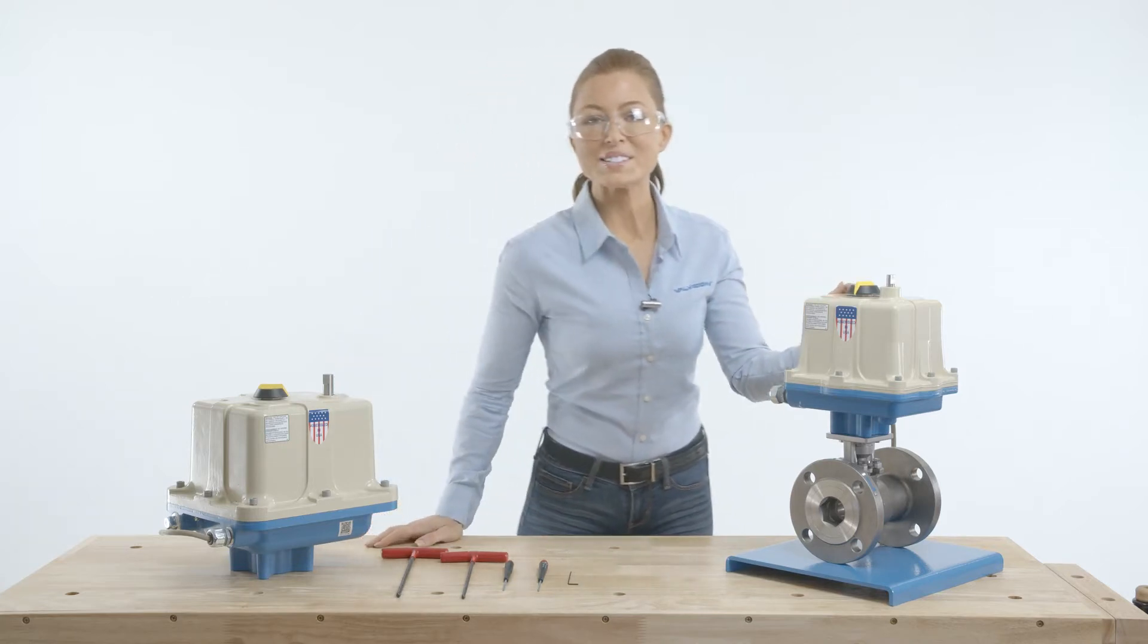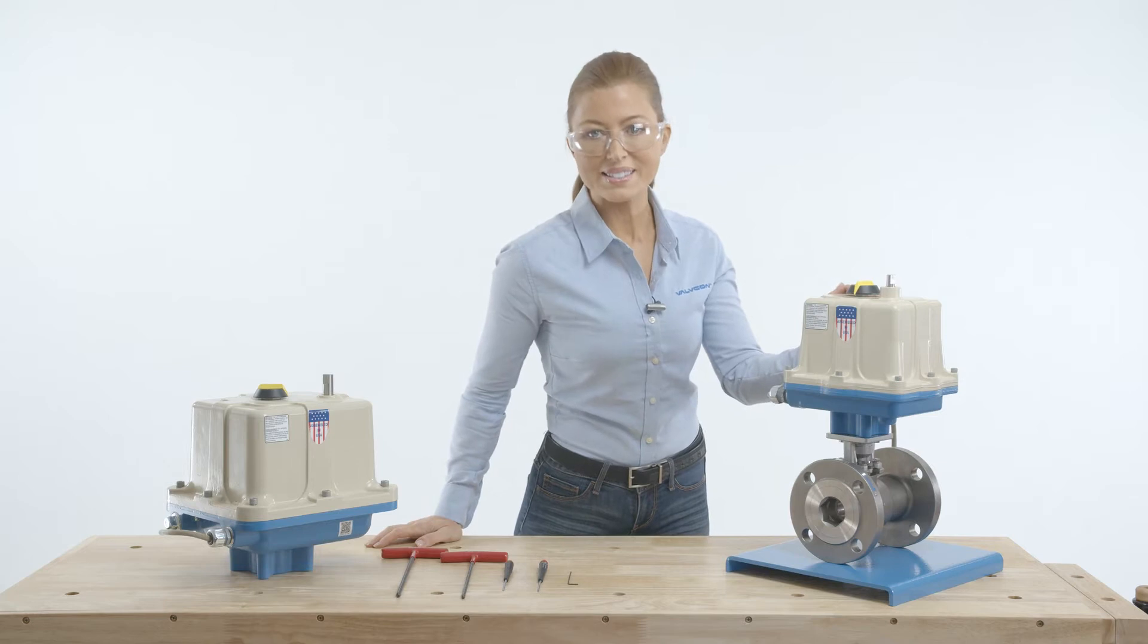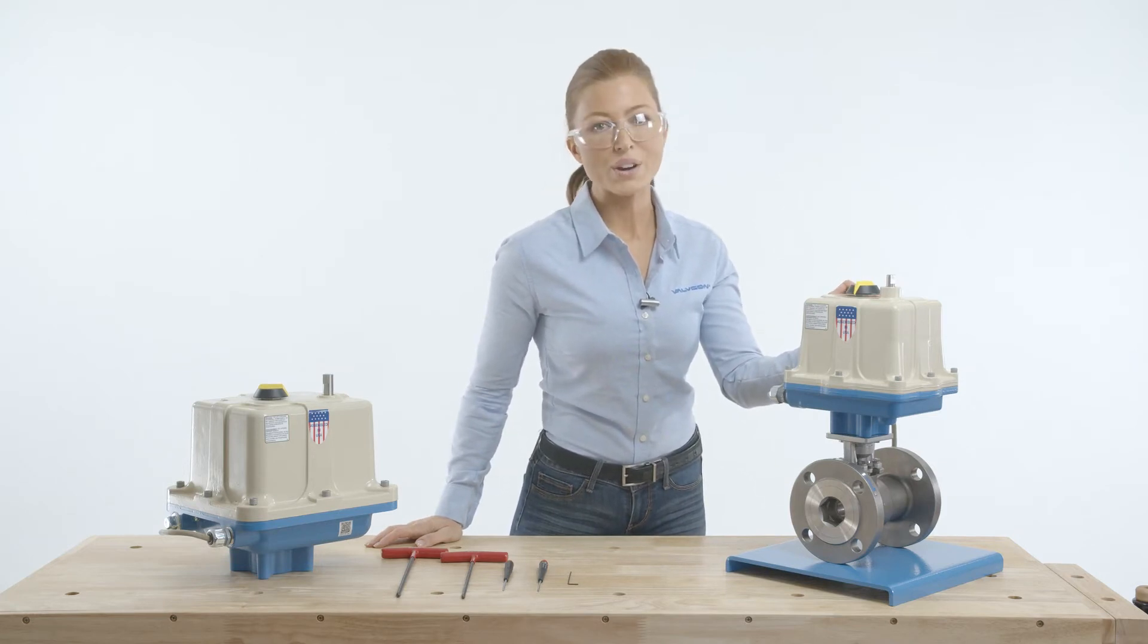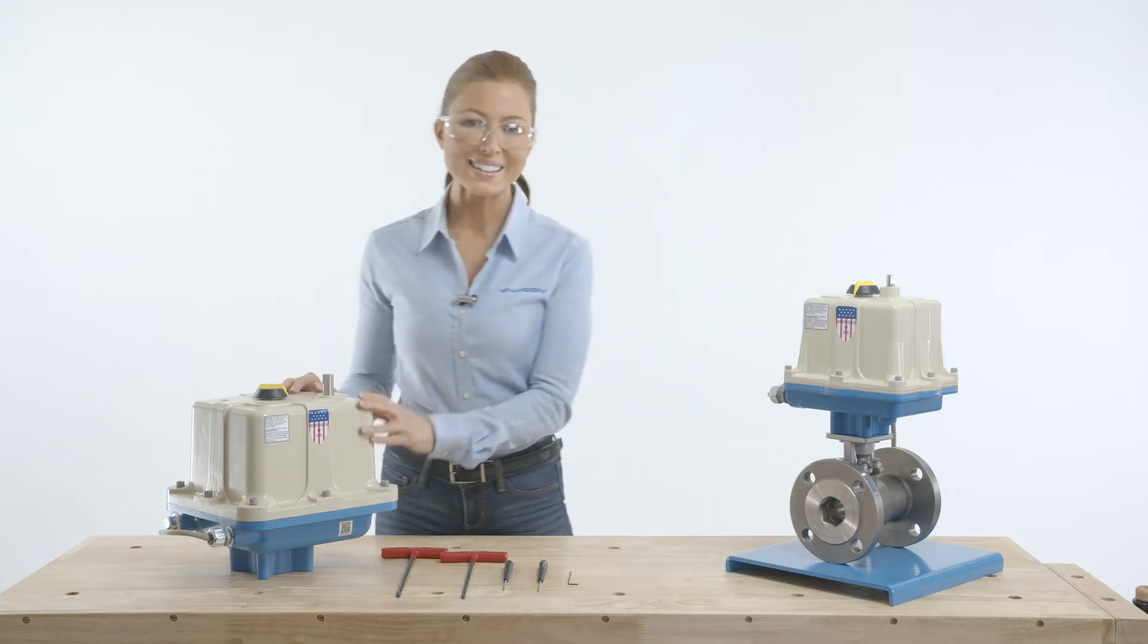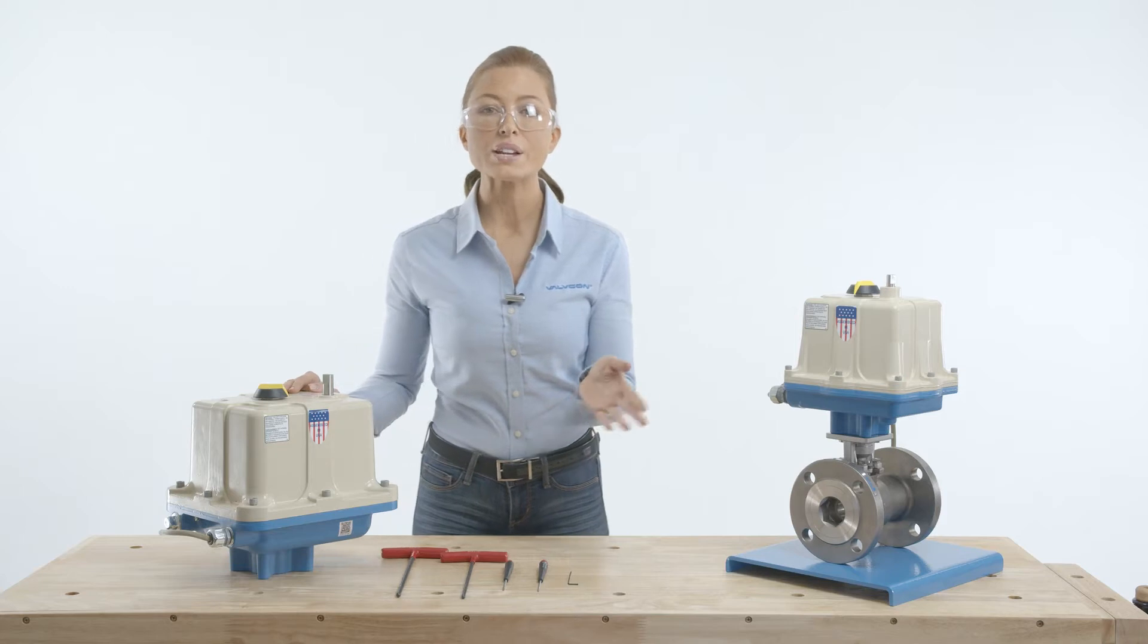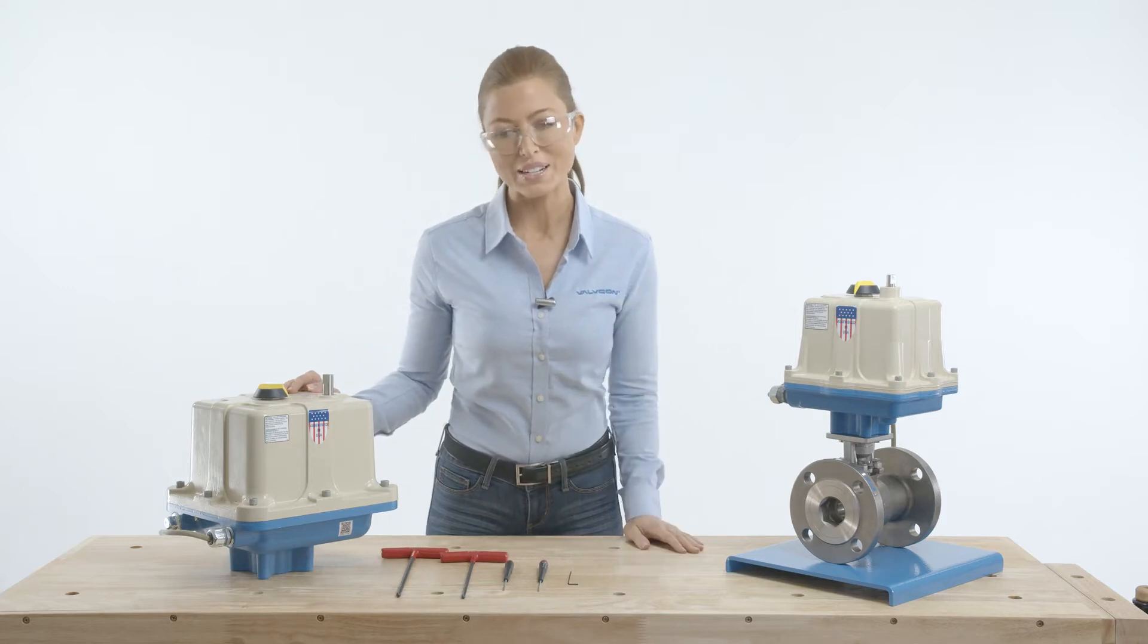Model codes that start with ADC indicate the standard enclosure and torque output in the 150 to 600 inch pound range. And LADC designates this larger enclosure for torque output in the range of 1,000 to 3,000 inch pounds.